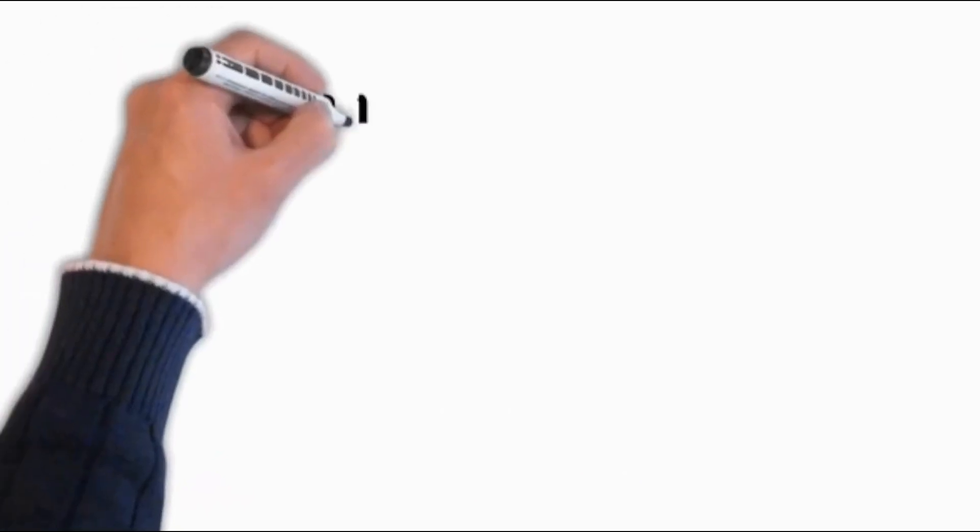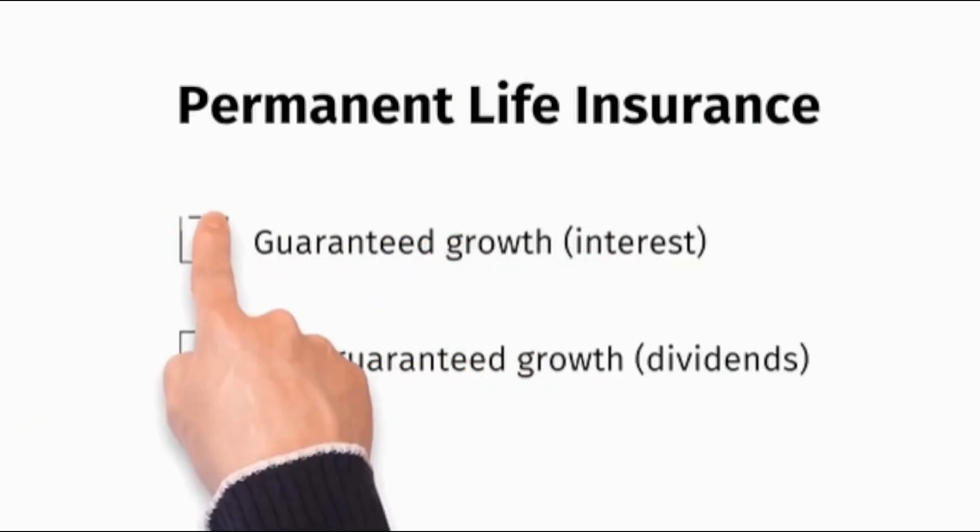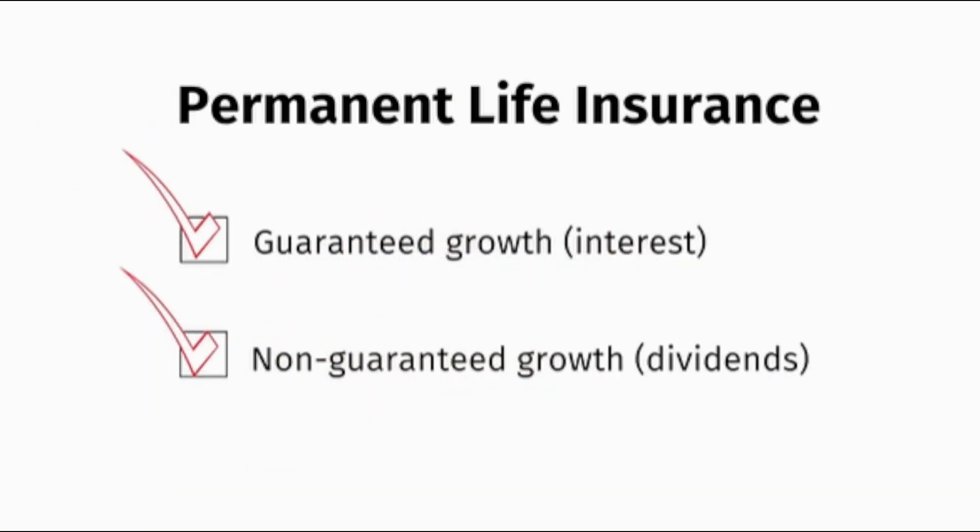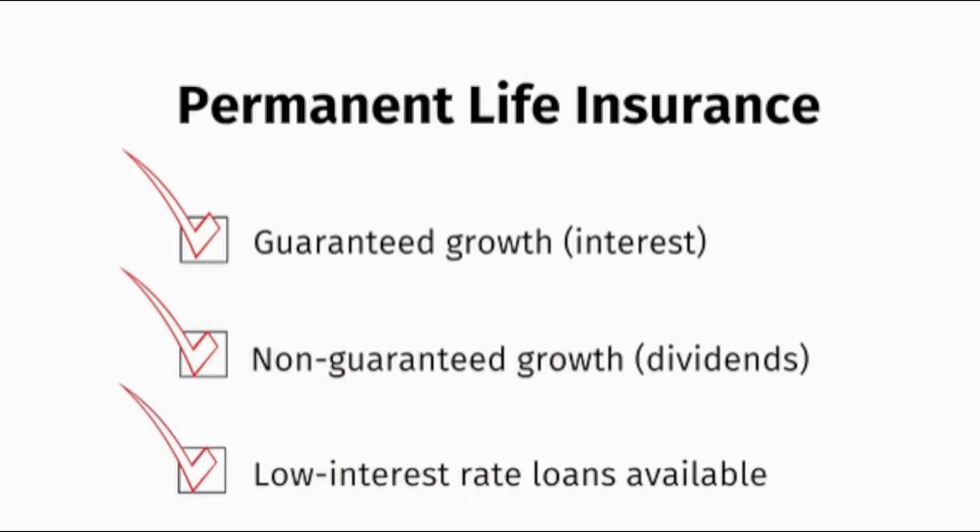That's why we use permanent life insurance. With the life insurance we use, there are guarantees built in as well as components of non-guaranteed growth. And because cash value life insurance is so safe, banks are willing to give loans with very low interest rates.